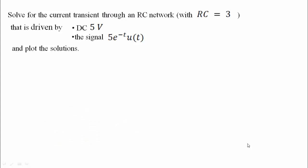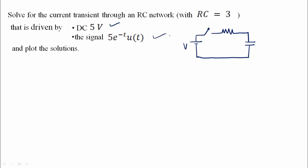Hello students. Next time we will go on a comment — where is the RC network solution? We will be aware of the RC network. We can see a circuit with a voltage V in it. It can be a battery — a 5 volt battery — or it can be any signal also. We can solve this mathematically. Here it is R and here it is going to be C.